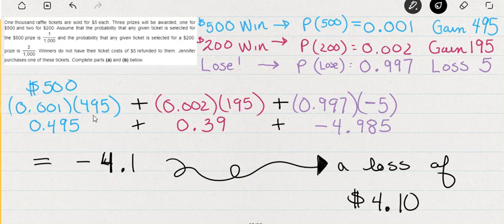We've got three possibilities. We could win $500, and one in 1,000 will win that $500. You could win $200. Two in 1,000 participants are going to win the $200. Or you could win nothing, which means you're a loser in the game. And 997 out of the 1,000 are going to be losers.